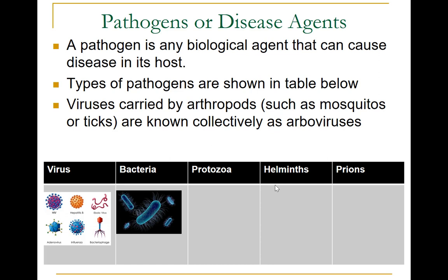Bacteria are single-celled organisms present everywhere, some of which can cause disease. Important bacteria causing human diseases include E. coli, which is responsible for urinary tract infection and diarrhea, and streptococci, responsible for wound infection, sepsis, and death. When conditions are not conducive to bacterial growth, bacteria form endospores — thick-walled cells that preserve the cell's genetic material, allowing them to remain dormant until conditions for multiplying return. Endospores can survive for extreme lengths of time.